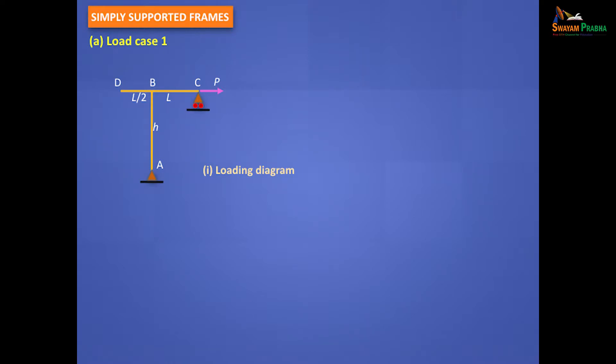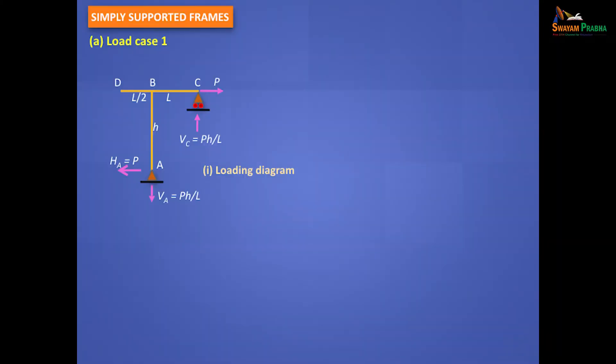Now we'll do some more practice problems of simply supported frames. Take the same frame made simply supported with a horizontal load P. Find the support reactions. You will get a horizontal reaction here at A of P. Will you get vertical reactions? Yes — because P creates a couple, so obviously you'll have upward reaction here and downward reaction here. The overturning moment is P into H, the restoring moment is this into L, so the force is that moment divided by L.